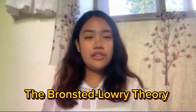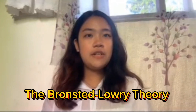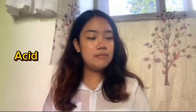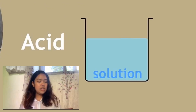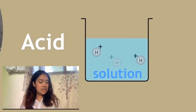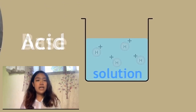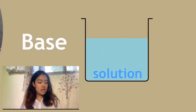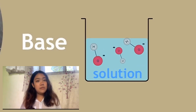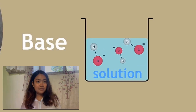The Bronsted-Lowery theory is a definition of acid and base that goes beyond the traditional concept of acids. This theory defines acids as substances that donate a proton, or H⁺ ions, and bases as substances that accept protons.